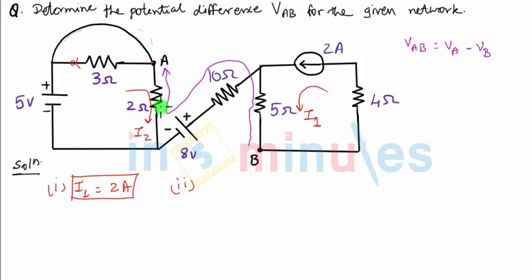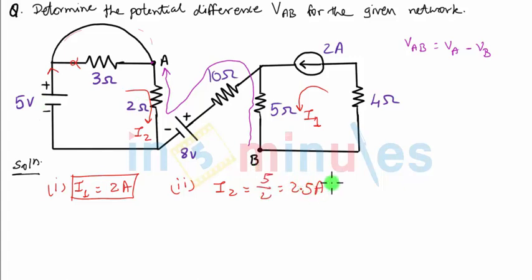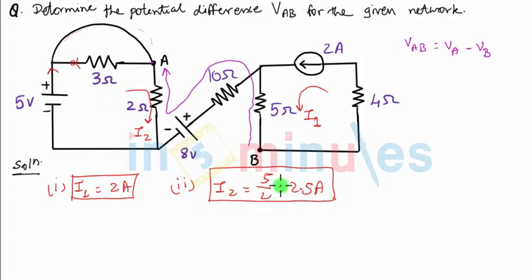We can apply Ohm's law directly: the 5 volt source drives current in the clockwise direction, which is downward through the 2 ohm resistance — the same direction as I2. So I2 = 5/2 = 2.5 amperes. If the short circuit were not there, we would take 3 and 2 ohms in series, giving 5/(3+2) = 1 ampere. But due to the short circuit making the 3 ohm redundant, the current is 2.5 amperes. We now have two of the three currents; the only remaining one is the current through the 10 ohm resistance.